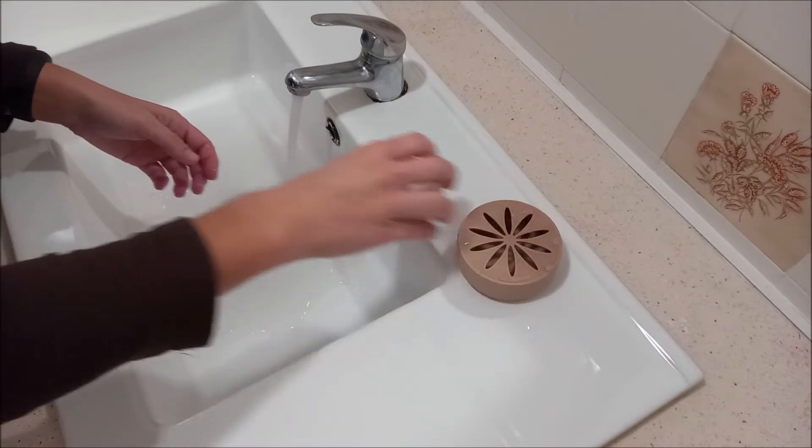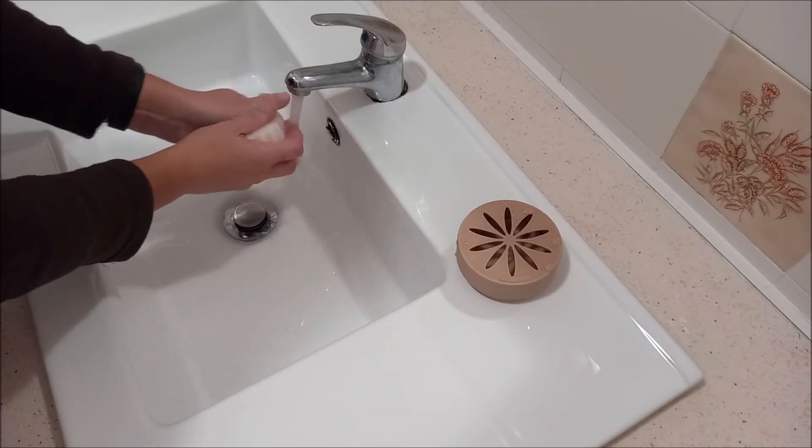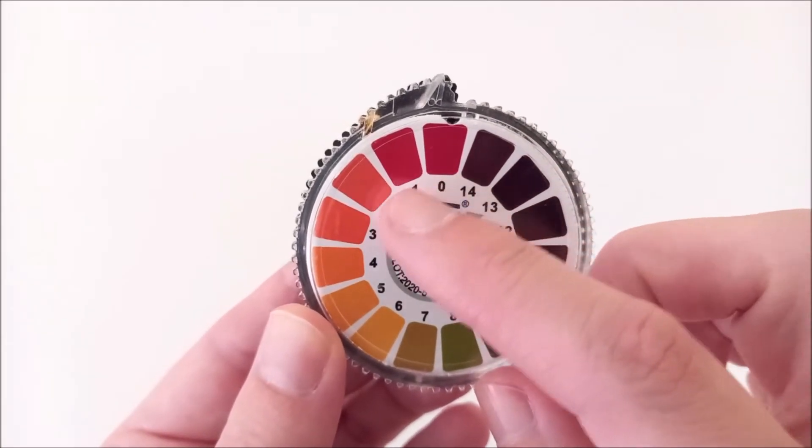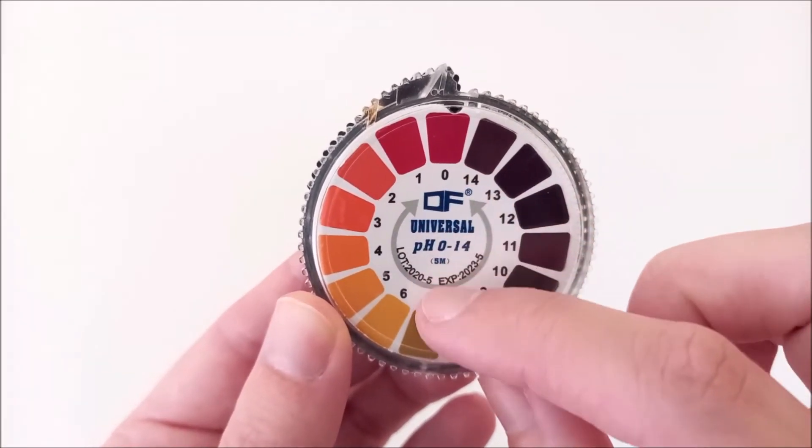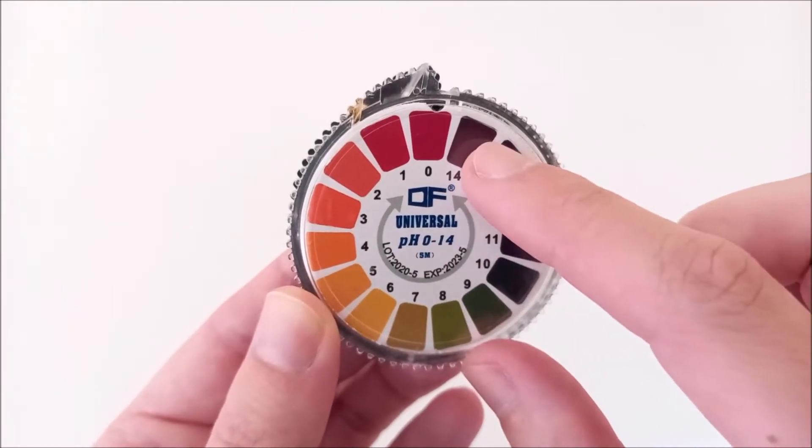It is important to test the pH to know if the soap can be used. The pH can vary between the values 0 and 14. The closer to 0, the more acidic; the closer to 14, the more alkaline.